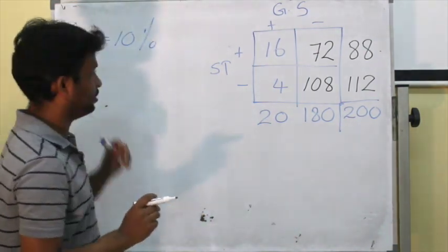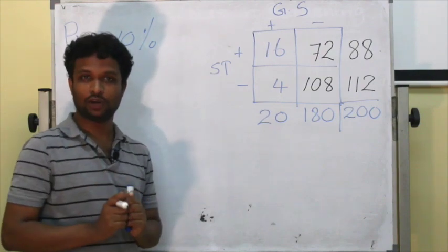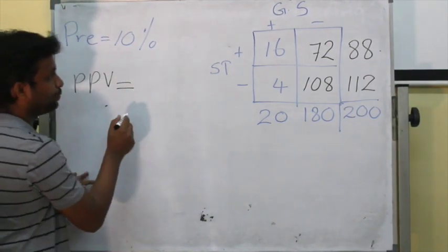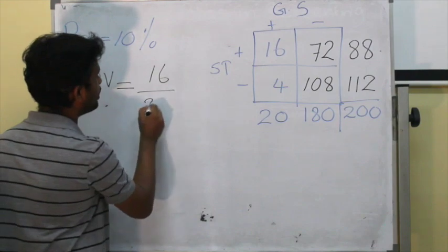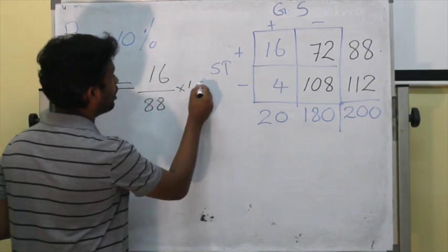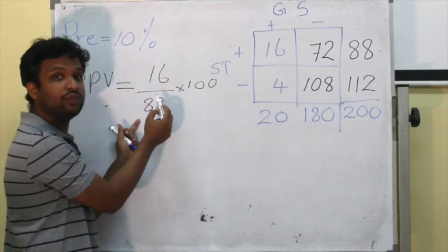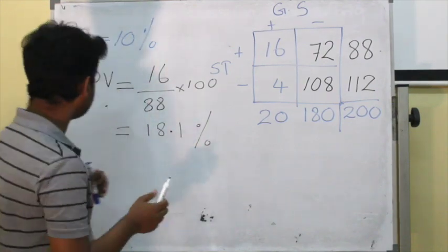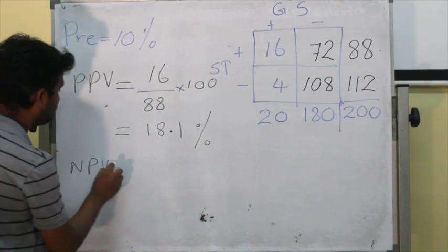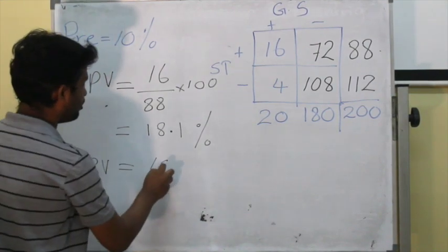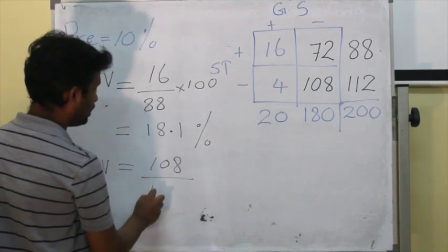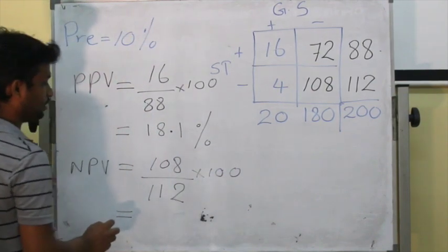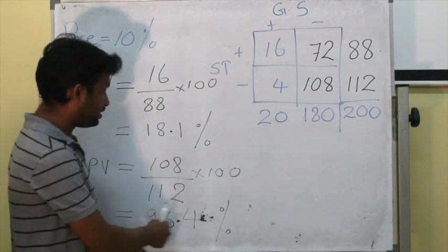Now our prevalence is 10%. What will happen to the positive predictive value and negative predictive value? Positive predictive value equals 16 divided by 88, multiplied by 100, which gives 18.1%. Negative predictive value is 108 divided by 112, multiplied by 100, which equals approximately 96.4%.